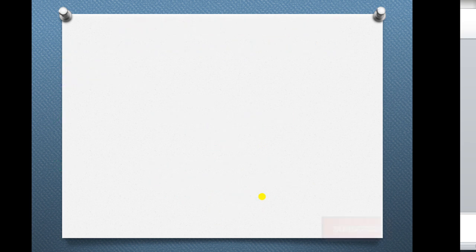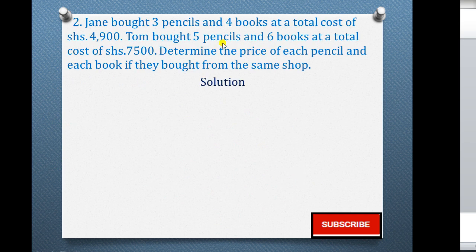Let's go to question 2. Question 2 says: Jen bought 3 pencils and 4 books at a total cost of shillings 4,900. Tom bought 5 pencils and 6 books at a total of shillings 7,500. Determine the price of each pencil and each book if they bought from the same shop.